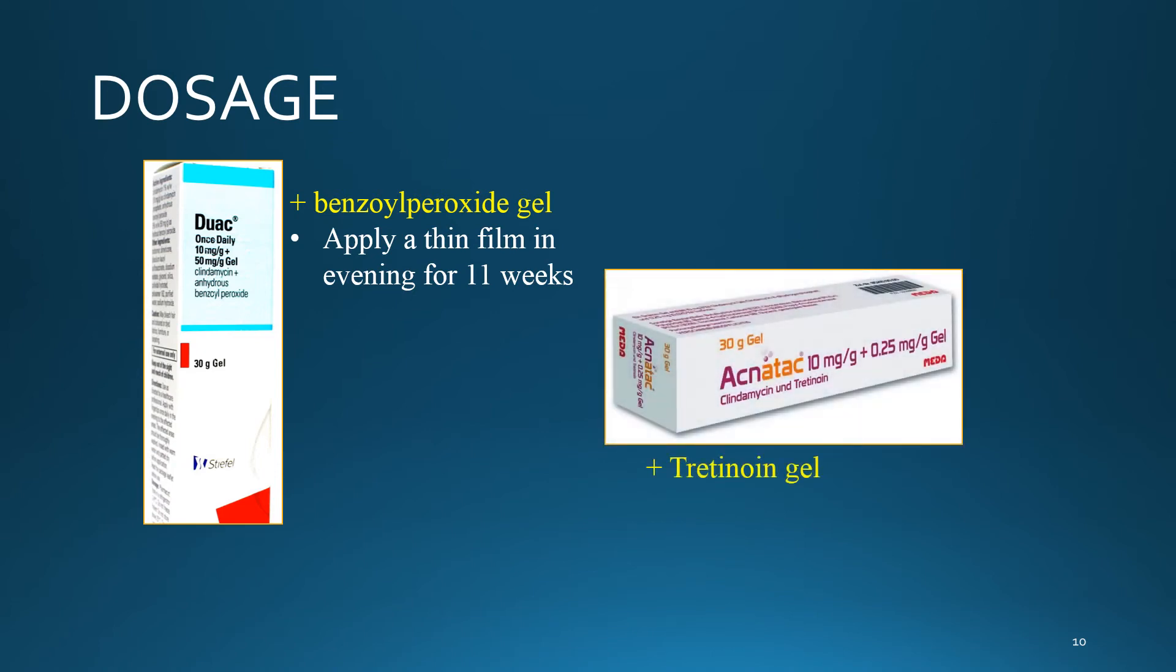Another gel used in the treatment of acne vulgaris is called Actanac. This gel contains 1% clindamycin combined with 0.025% tretinoin. When using this gel, a small amount should be applied once daily at night for a period of 12 weeks or less. This should be done after the affected area is cleaned with mild soap and dried.